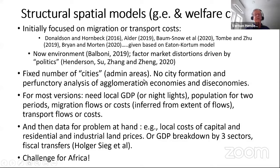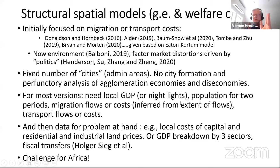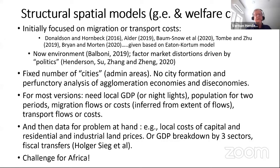In these models, there's a fixed number of cities — no city formation and only a perfunctory analysis of agglomeration economies and diseconomies. To estimate these models you need local GDP data, or potentially nightlights, though nightlights break in 2013, giving you a series from 1992 to 2013 and then a separate series after. You also need population for at least two periods, migration flows, and if you don't have flows, you have to infer them from costs, which is hard since costs are very high and very context-specific.